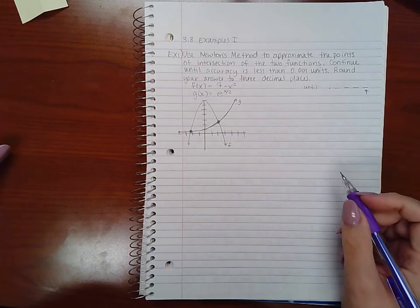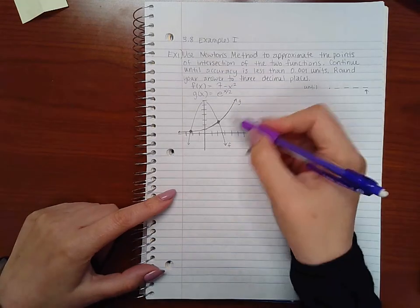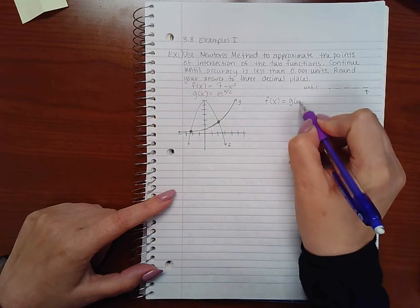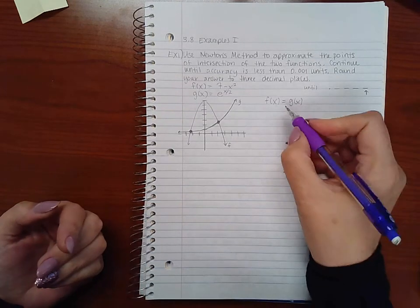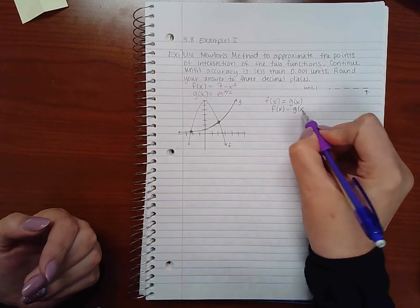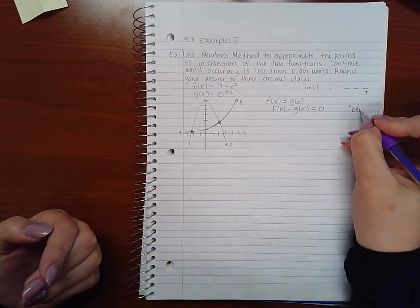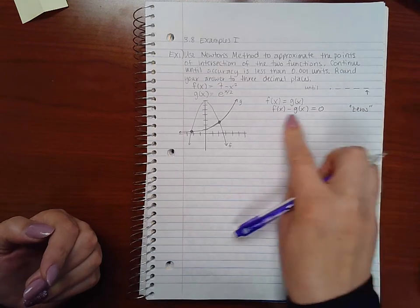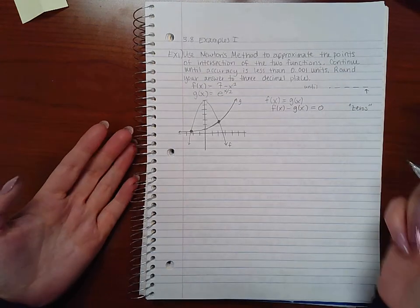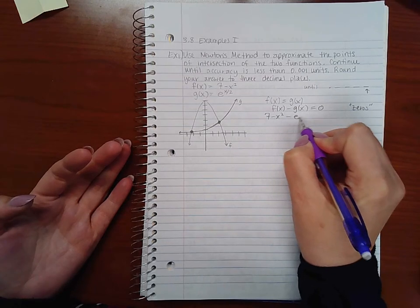So what we're going to do here is remember, Newton's method only applies to what are called zeros of a function. Since I want to know where they intersect, I'm basically asking when f of x equals g of x. If you want to know the zeros of this, you would do f of x minus g of x equal to 0. The solutions to this equation would be considered zeros, but those solutions would also be solutions to this equation, therefore giving me my intercepts. So I'm going to apply Newton's method to this equation here.